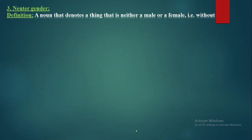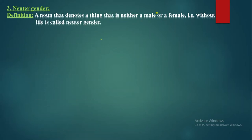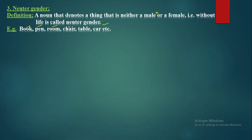The third type is neuter gender. A noun that denotes a thing that is neither male nor female — that is, without life — is called neuter gender. Any noun that denotes neither a male nor a female, that is without any gender, is known as neuter gender. Examples: book, pen, room, chair, table, car, etc.